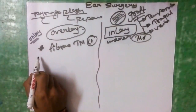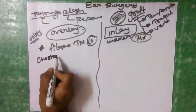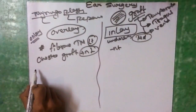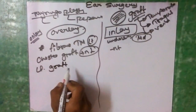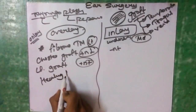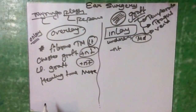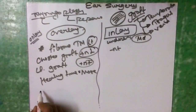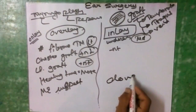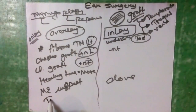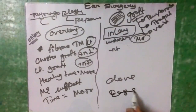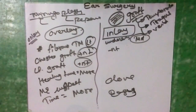In overlay there is a chance of graft cholesteatoma, while there is no such risk in inlay. Graft lateralization can occur in overlay. Healing time is more in overlay and less in inlay. Middle ear inspection is not possible in overlay but can be done in inlay. Overlay is also more time-consuming, while inlay takes less time.